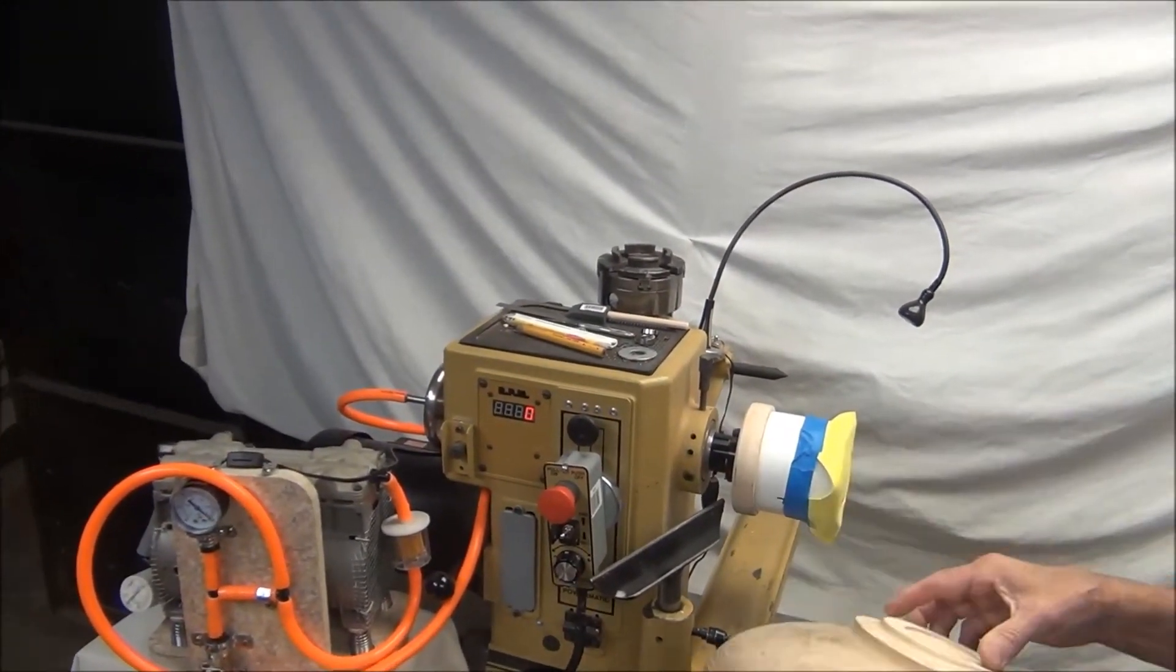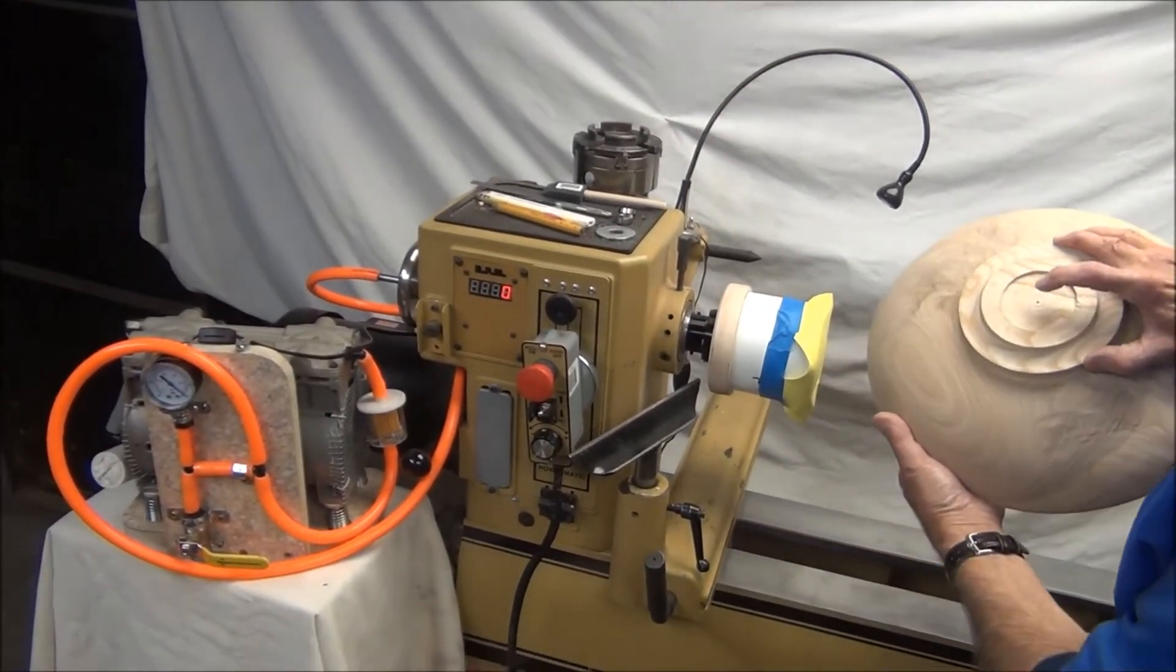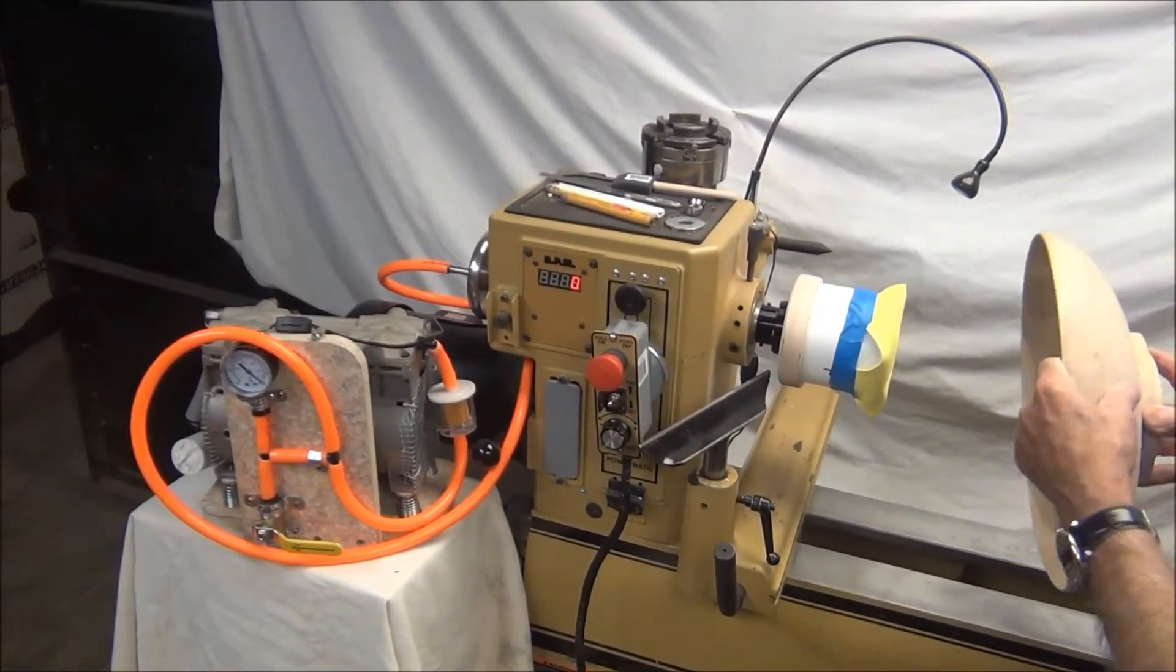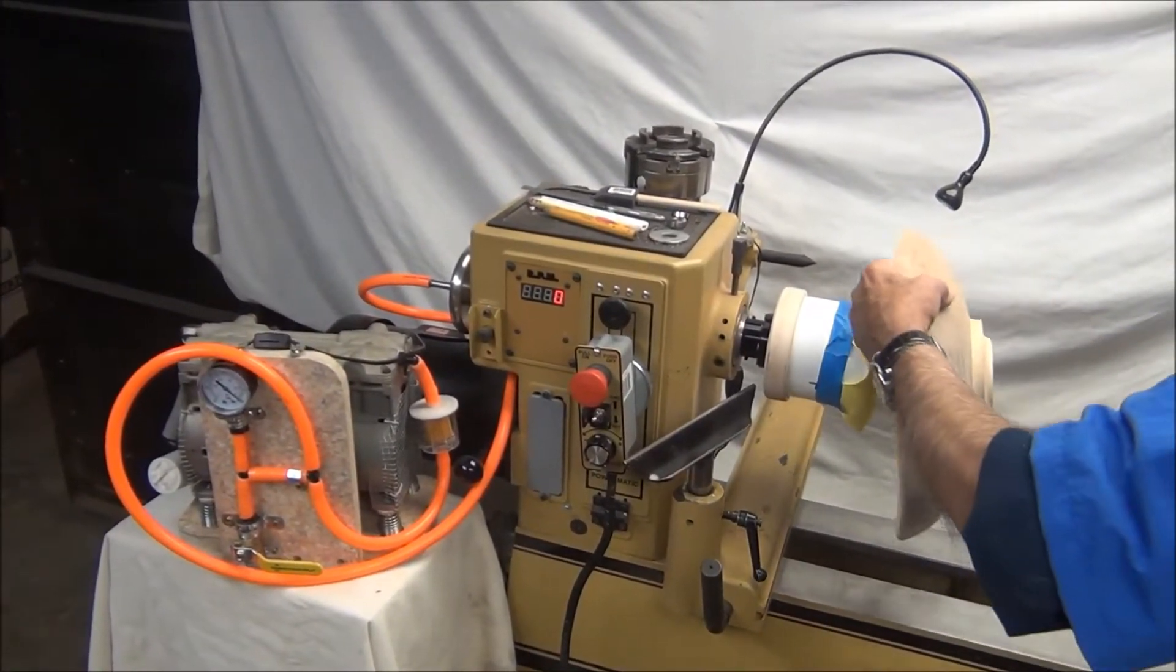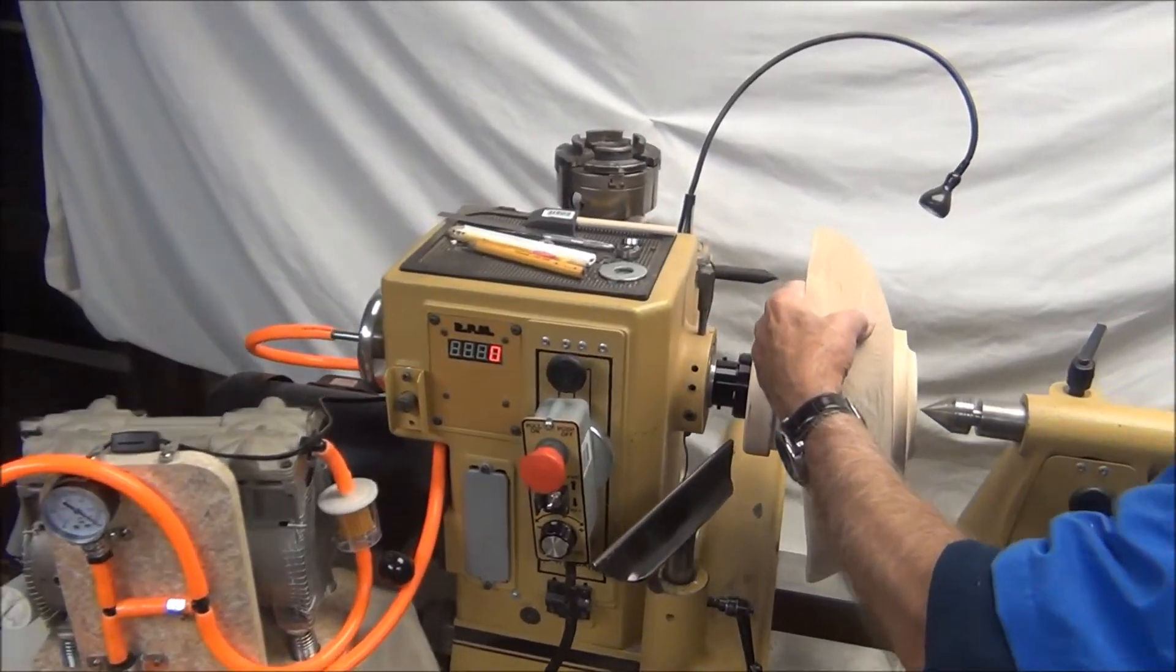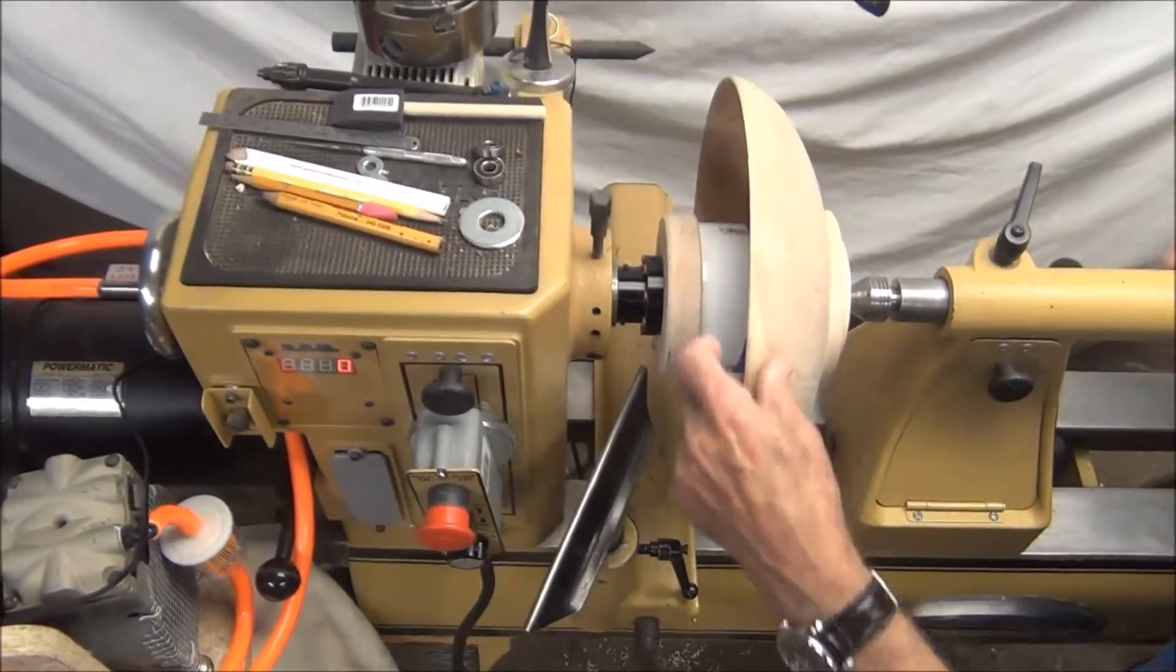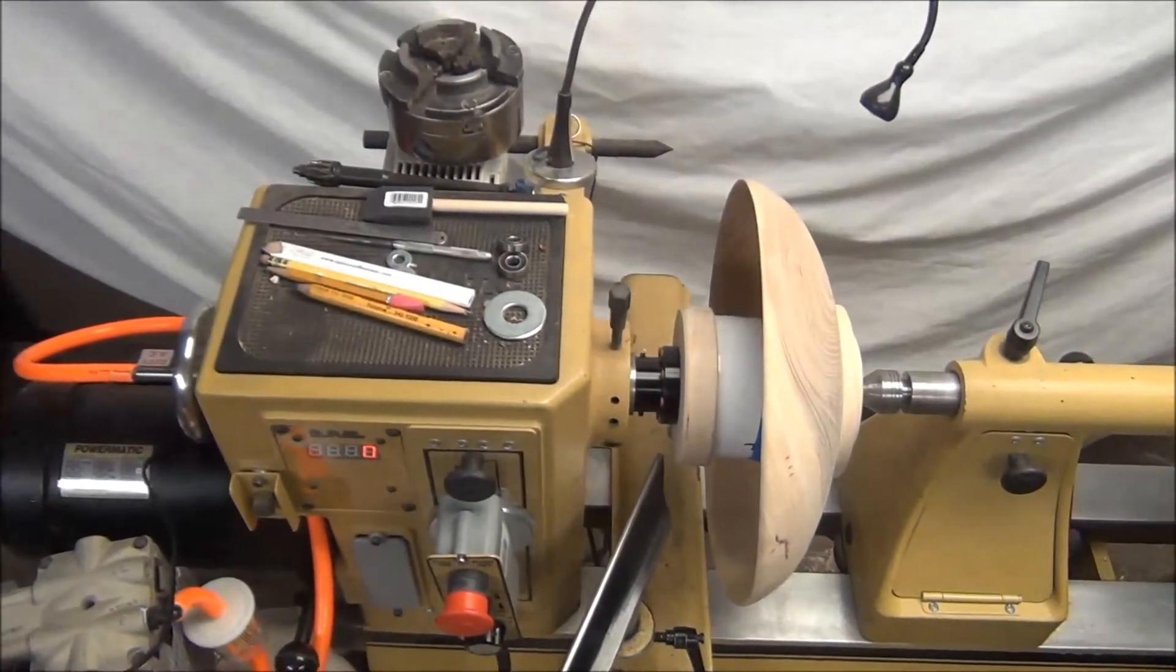If when you've formed your bowl you end up with a registration mark, a dimple, a pointer, or whatever, you're a little bit ahead. You can bring up your steady rest and put it against the gasket on the chuck.